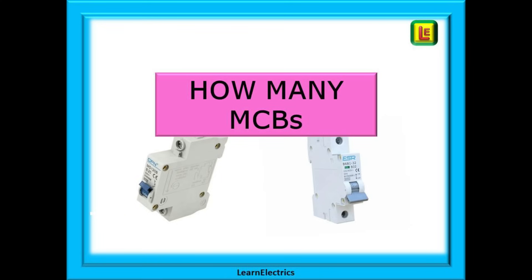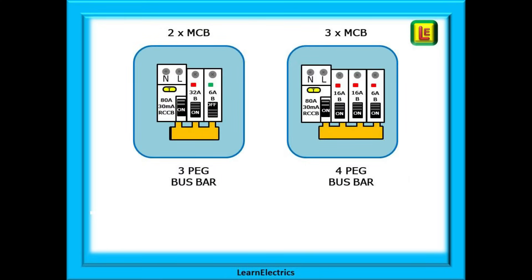How many MCBs are to be installed is the next consideration. A 2-MCB unit will require a 3-peg bus bar. A 3-MCB unit needs a 4-peg bus bar. A bus bar is nothing more than a thick copper bar with pegs or teeth that can link the RCCB with each of the MCBs. The supply voltage, the 230 volts, flows from the RCCB to each of the MCBs.